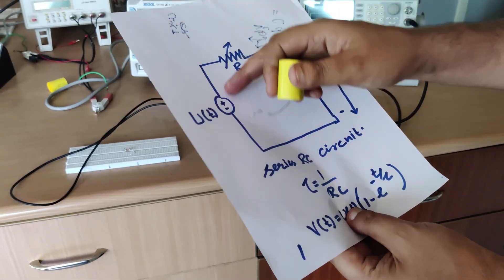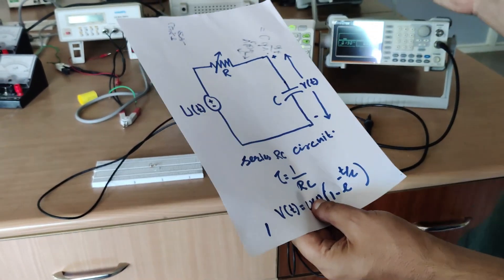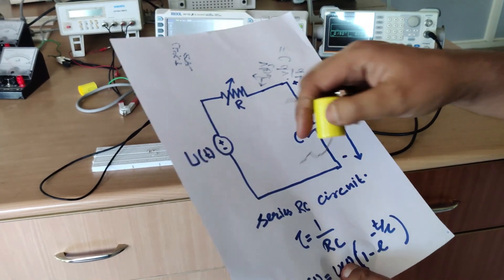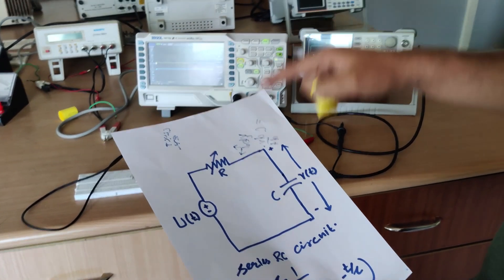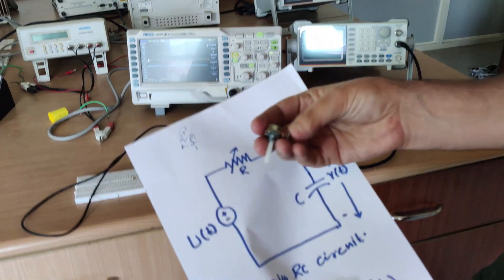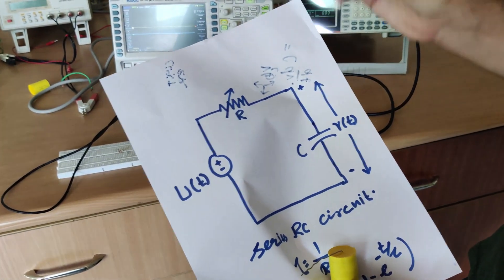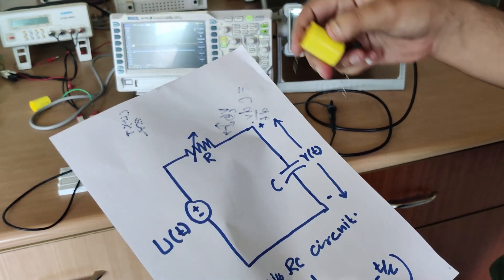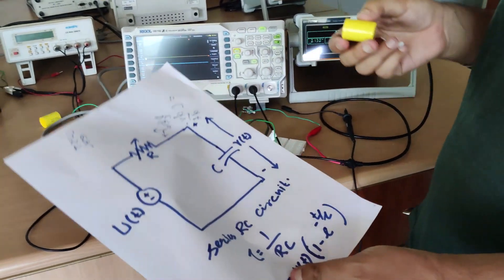We will design this circuit. This is the schematic diagram that we are going to design, and we will see the behavior of the capacitor. We have a step input that we will provide using this function generator. Then we have the variable resistor — you can see the potentiometer, this is the variable resistor of 47k. We can vary it from 0 to 47k. Then we have the capacitor.